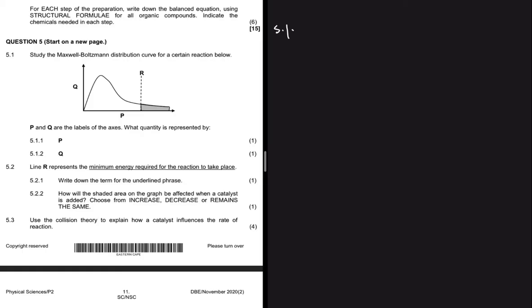We're given a Maxwell-Boltzmann distribution curve for a certain reaction. Q is on the y-axis, P is on the x-axis, and there's a point R. Question 5.1.1 asks what quantity is represented by P. On the x-axis of the Boltzmann distribution curve we have kinetic energy, so 5.1.1 is kinetic energy. Then 5.1.2 asks for the name for Q, which is the number of particles.